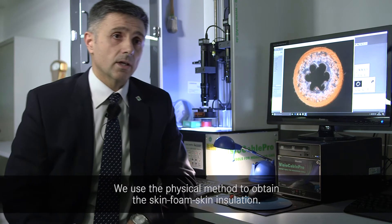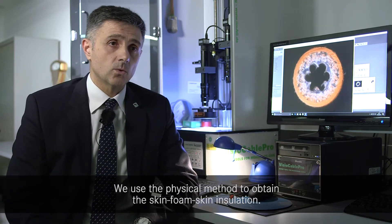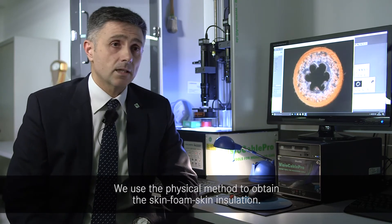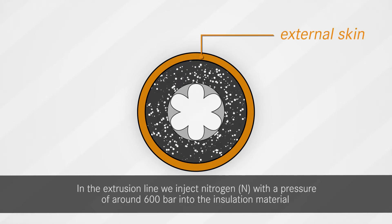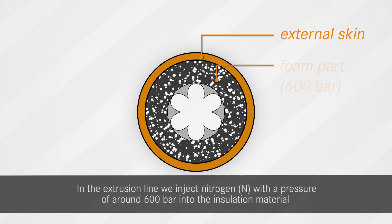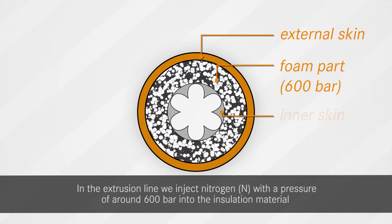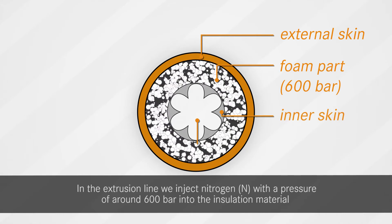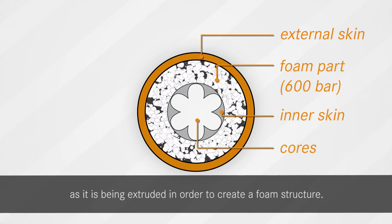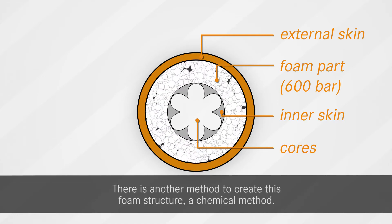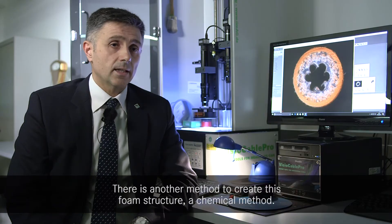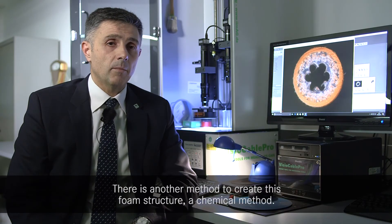We use the physical method to obtain the skin-for-skin insulation with an extrusion line and azoto inside. We put the azoto inside to create the bubble with the pressure around 600 bar. There is another method to create the bubble: the chemical method.